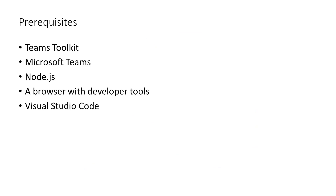The prerequisites for the Teams Toolkit are: the Teams Toolkit extension for Visual Studio Code, Microsoft Teams, Node.js, a browser with developer tools — for this demo we'll be using Microsoft Edge — and Visual Studio Code to run the extension. There is one more prerequisite: having a developer tenant on your M365 account. I went ahead and set that up; it was a couple of clicks and it'll be included in the documentation. This basically allows you to have side-loading for the apps you're creating enabled on your Teams client.